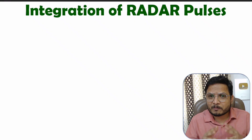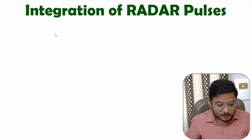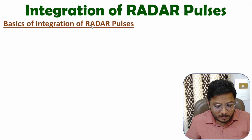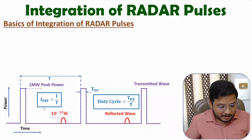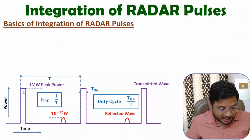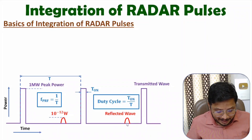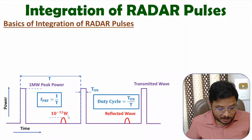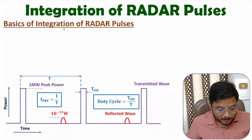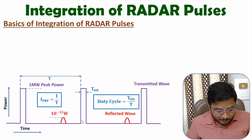Let me discuss the basics of integration of radar pulses. With a radar system, we use the integration process to optimize the range of the radar. We transmit a high power signal — transmitted power in terms of a few megavolts — while the received echo signal, shown in red, has a strength in terms of 10 to the power minus 12 watts. So with the use of integration, we can optimize the range of the radar by summing the reflected waves to optimize the amplitude of the received echo signal.